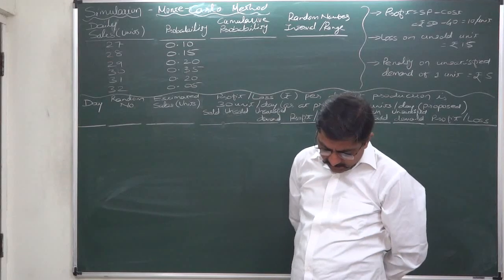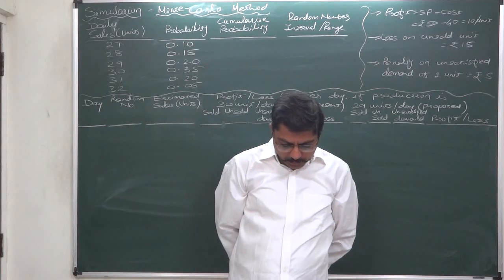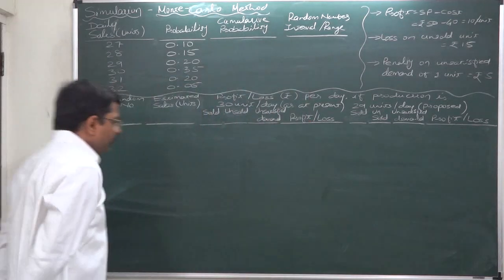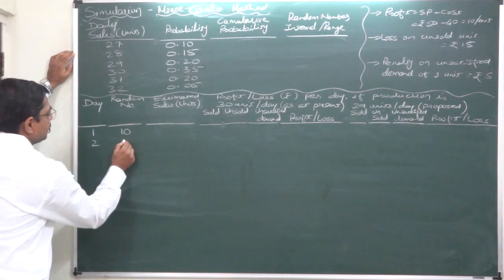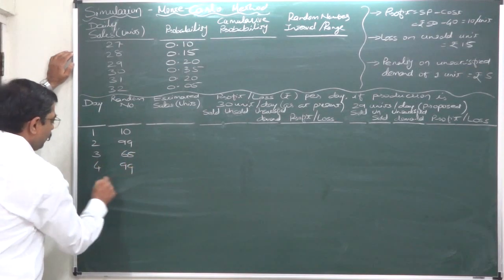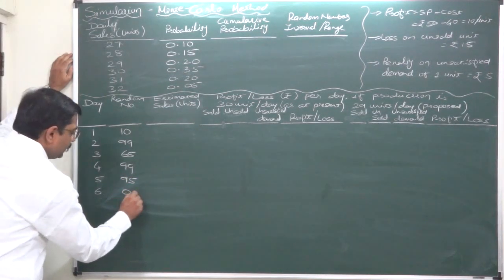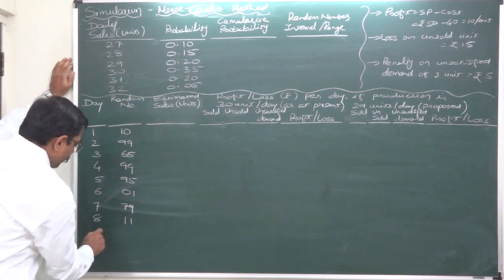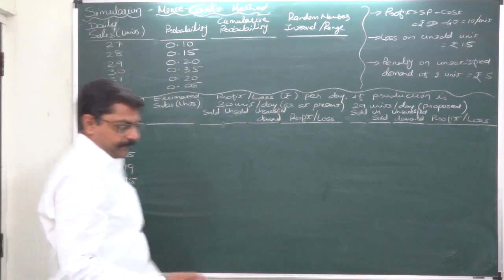Using the following random numbers, estimate the total profit or loss for the company for the next 10 days if the company decides to produce 29 units per day. Let's write day and random number: Day 1 — 10, Day 2 — 99, Day 3 — 65, Day 4 — 99, Day 5 — 95, Day 6 — 1, Day 7 — 79, Day 8 — 11, Day 9 — 16, Day 10 — 20.